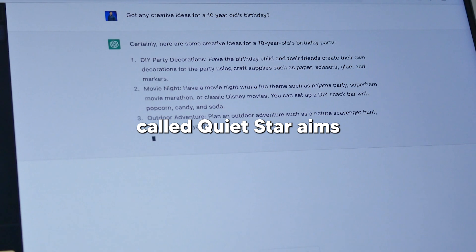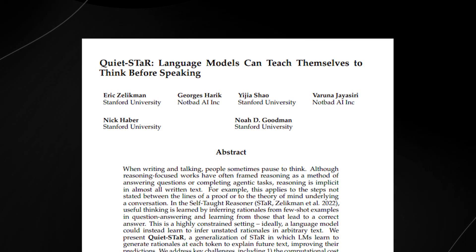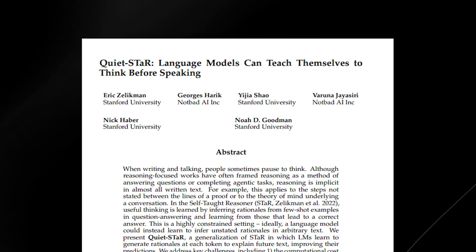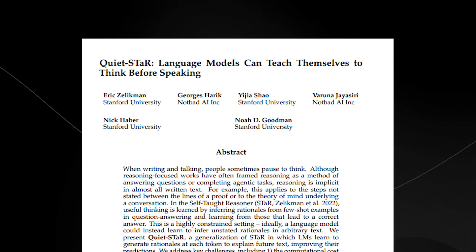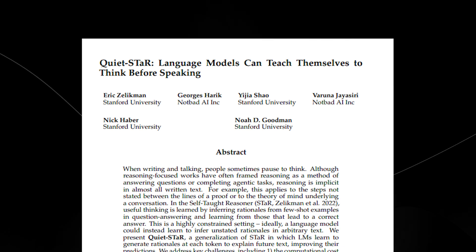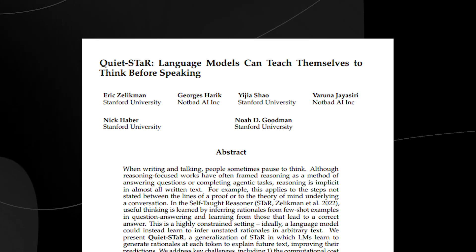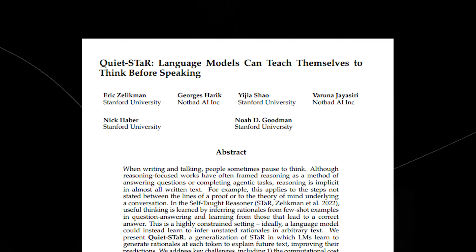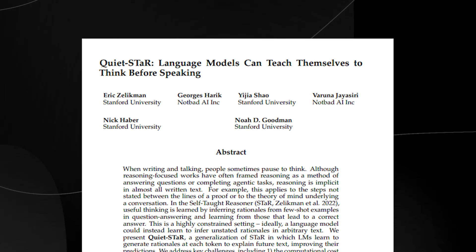A new approach called QuietStar aims to allow language models to learn implicit reasoning from arbitrary text without the need for specialized datasets. The key idea is to train the model to generate useful thoughts between tokens of text that help it predict the next parts of the text more accurately. In this way, it learns general reasoning capabilities that are embedded throughout language.